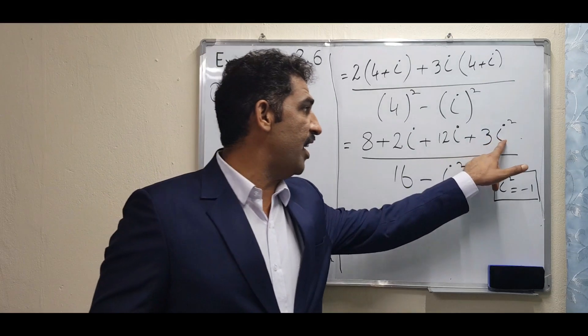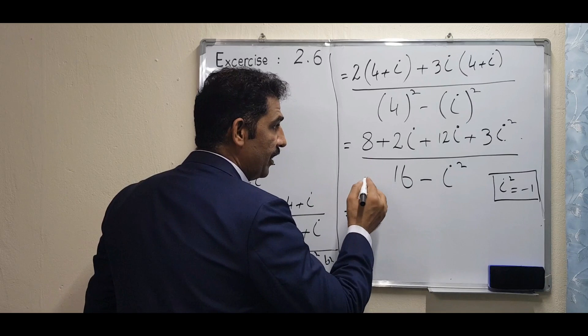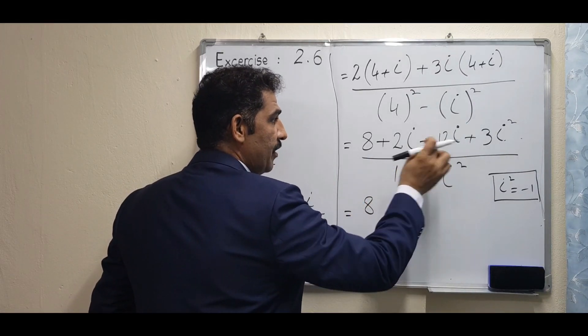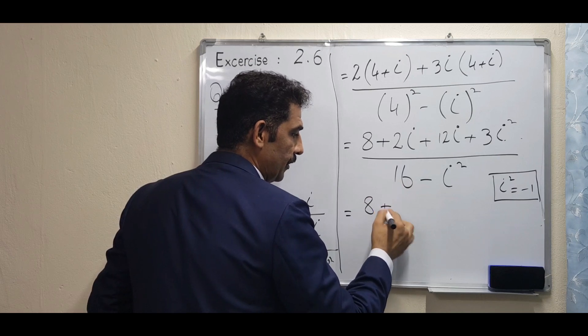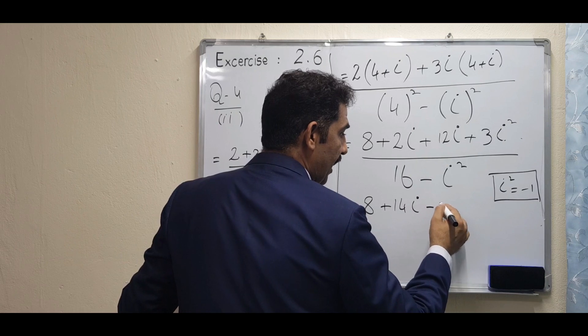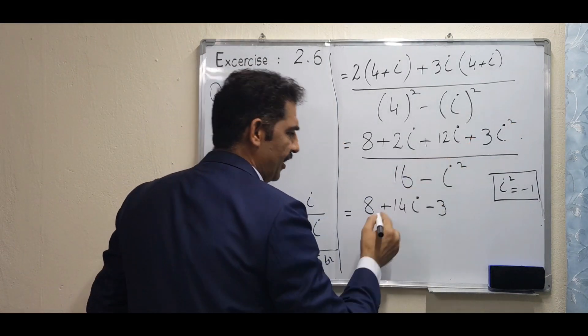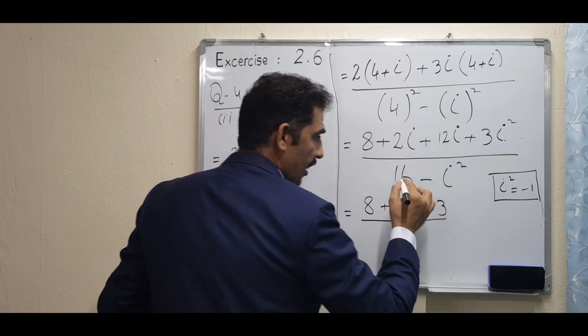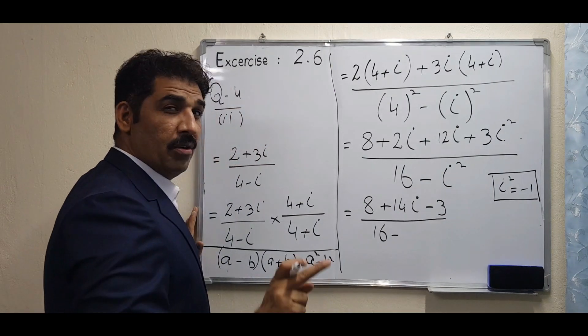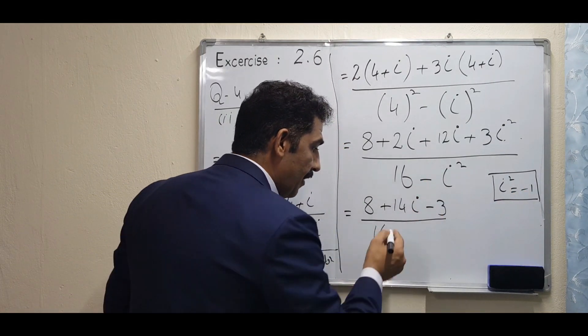The sign will be changed. This sign and this sign, both signs will be changed. So how to write? It will remain the same: 12 iota plus 2 is 14 iota. And here I am changing the sign directly. Iota² = -1, so change this sign. And here 16 minus... because iota² = -1, this minus and this minus will become plus.